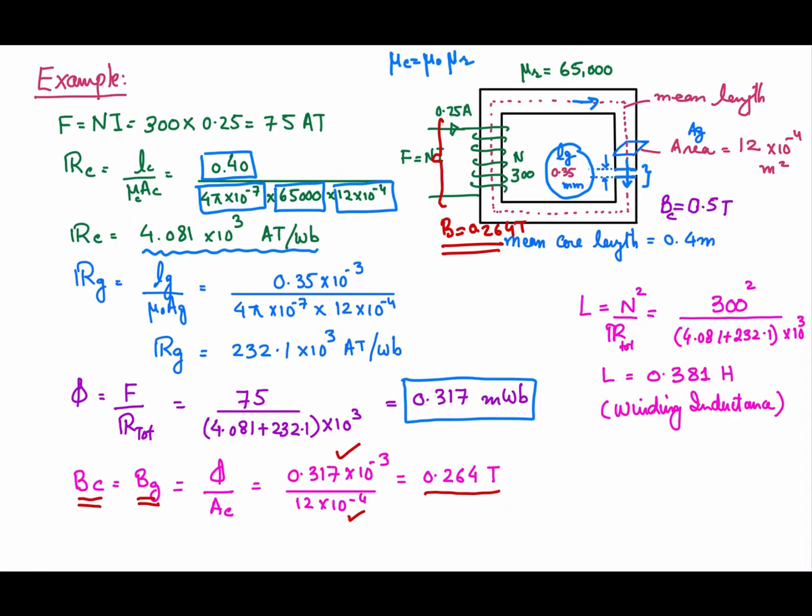In summary, this video has discussed how to calculate the inductance of a winding based on the dimensions of the core structure and the properties of the magnetic circuit. We have also seen how to calculate the basic parameters in magnetic circuits such as reluctance, permeance, flux, flux density, MMF, and current. Thank you very much.